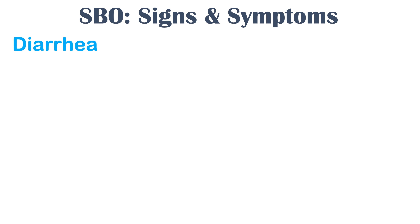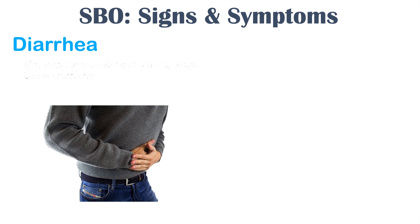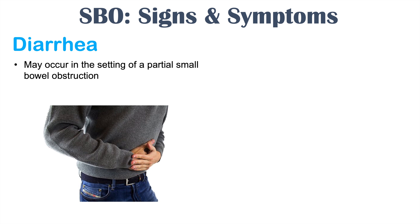There are some other signs and symptoms important to note, including diarrhea. While constipation and obstipation are very common symptoms, diarrhea is often a more uncommon symptom. It may occur in the setting of a partial small bowel obstruction, but you won't see this with a complete small bowel obstruction. More often than not it will be constipation and obstipation, but diarrhea is possible in certain instances.